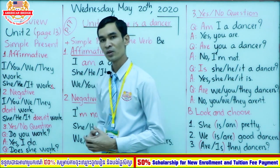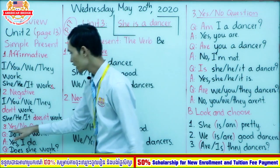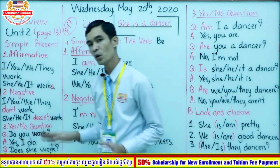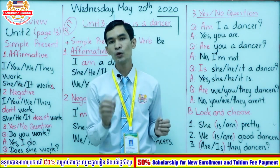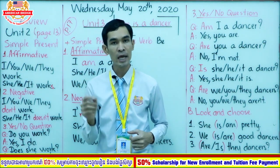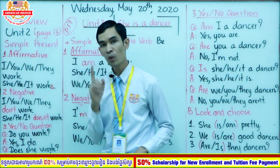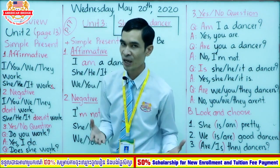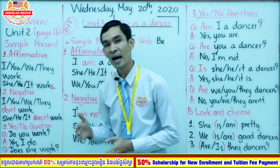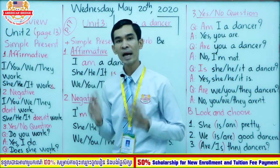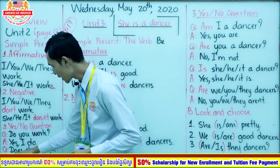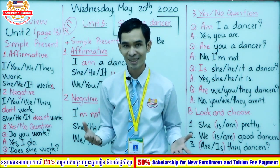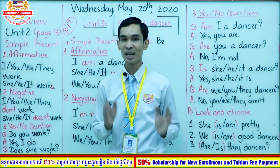Now let's continue to number three: yes/no questions. For yes/no questions, we use 'do' or 'does'. 'Do' is used with I, you, we, and they. 'Does' is used with he, she, and it. For example: 'Do you work?' — if yes, 'Yes, I do'; if no, 'No, I don't.' 'Does she work?' — yes: 'Yes, she does'; no: 'No, she doesn't.'